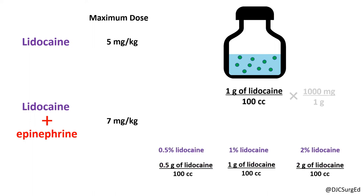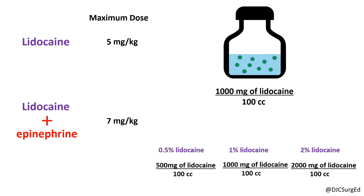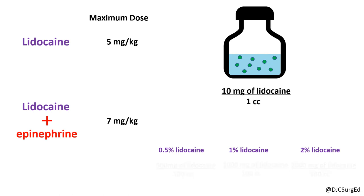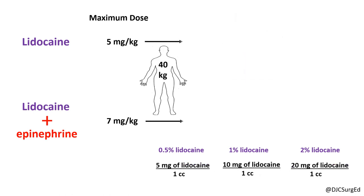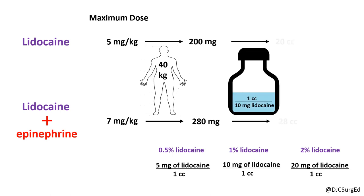To calculate the maximum allowable dose, we must first convert from grams to milligrams, and then by canceling zeros, determine the milligrams of lidocaine per cc. For a 40 kg person, the maximum dose is 200 mg for lidocaine and 280 mg for lidocaine with epinephrine. If 1% lidocaine were used, the total volume that can be given is 20 cc and 28 cc, respectively.